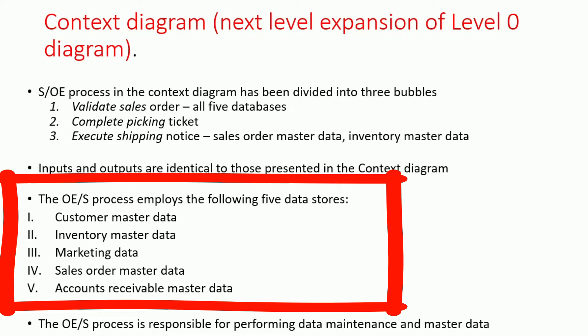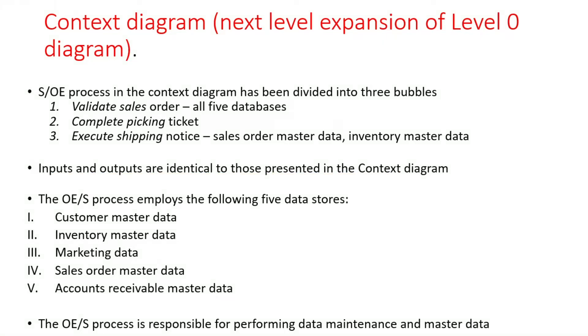The five data stores are: customer master data, inventory master data, marketing data, sales order master data, and accounts receivable master data — all of which need to be updated. The order entry sales process is responsible for performing data maintenance and master data updates for each and every sales order event.